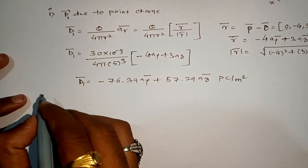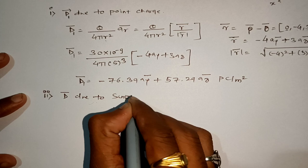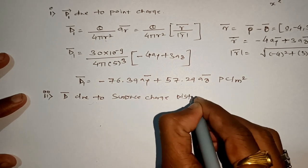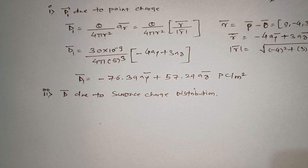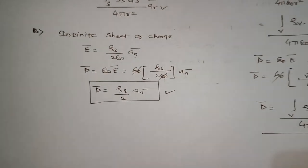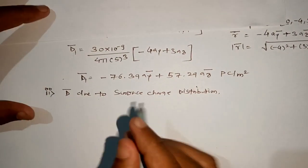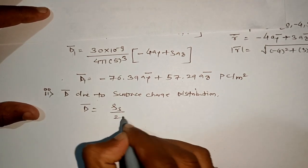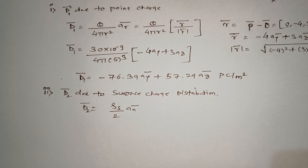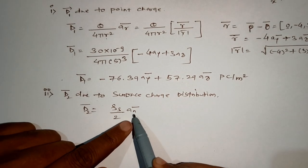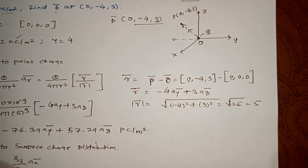Now for the second contribution: D-bar due to surface charge distribution. The formula derived is D-bar = (rho_s / 2) · an-bar, where rho_s = 12 nC/m² is given. We need to determine the normal vector an-bar.